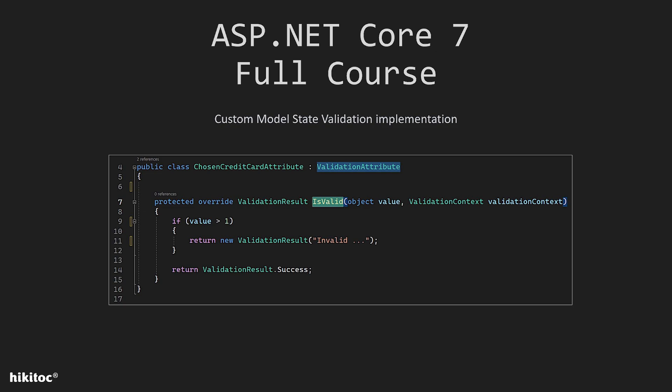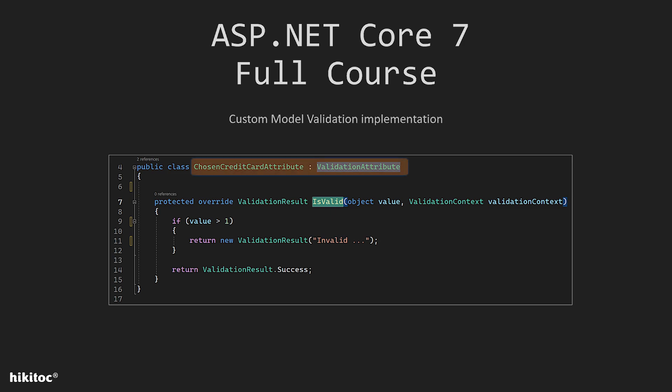In such cases, creating a custom validation attribute allows us to encapsulate this logic within the attribute itself. To implement a custom model validation attribute, we need two items. Firstly, it's a class that inherits from the ValidationAttribute abstract class.